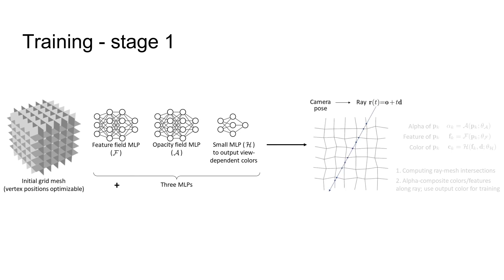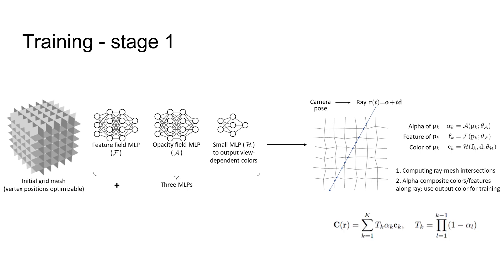During training, for each pixel, we shoot a ray and compute intersections with the mesh. Then we use MLPs to compute the opacity, feature, and color of each intersection. Finally, we alpha-composite the colors of the intersection points to obtain the pixel color. We supervise the entire model with a loss between the output pixel color and the ground truth.